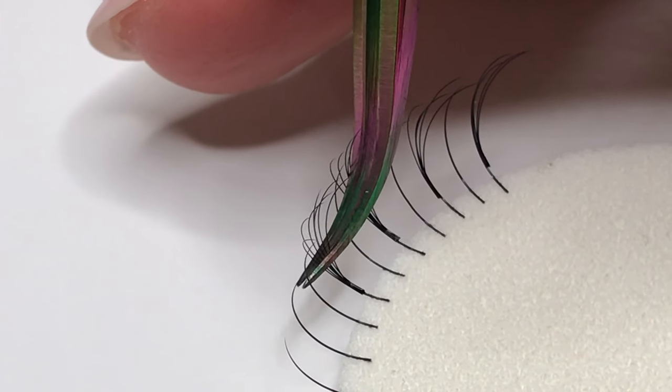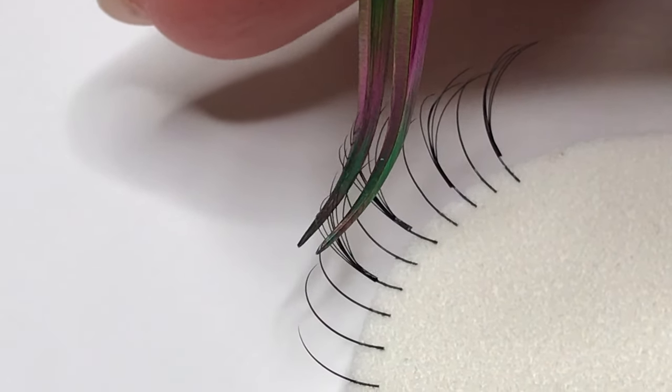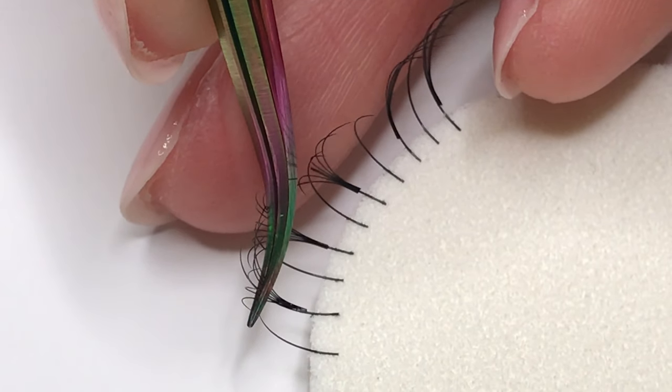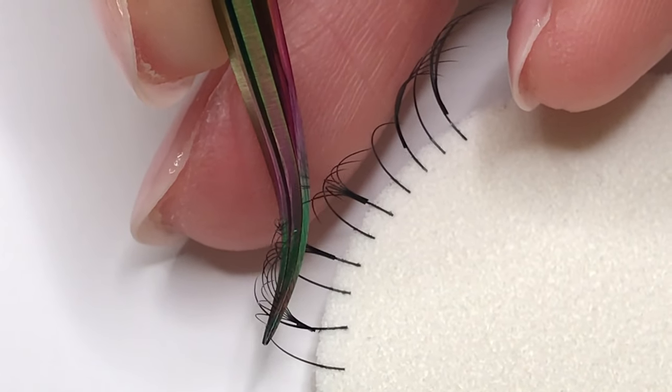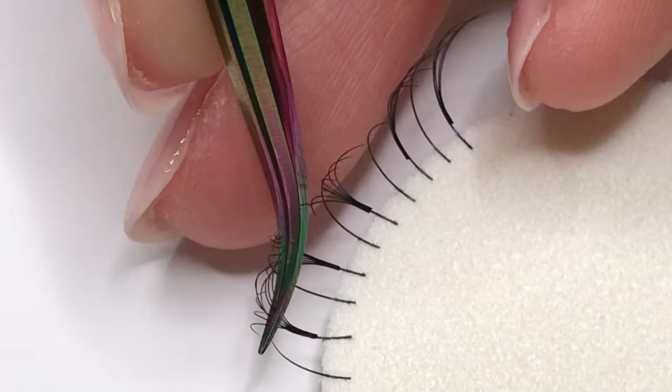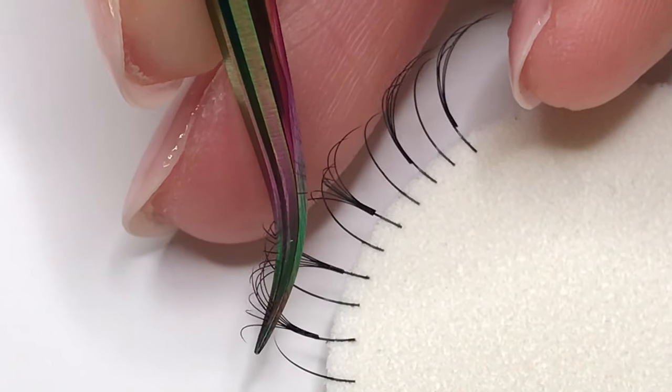Another way to attach the fan more quickly is by doing this kind of hooking motion to let the fan just snap onto the natural lash. Once it's securely attached then you'll know when to release your grip.